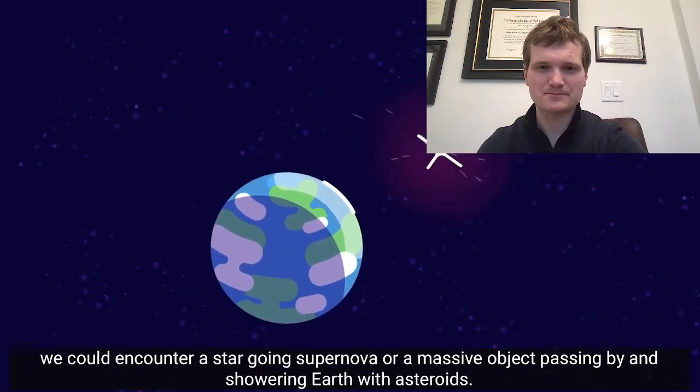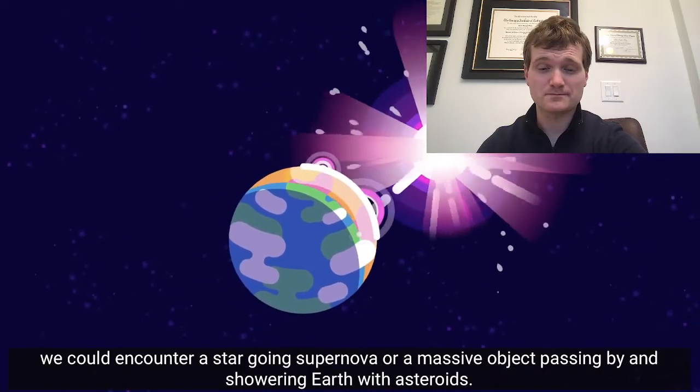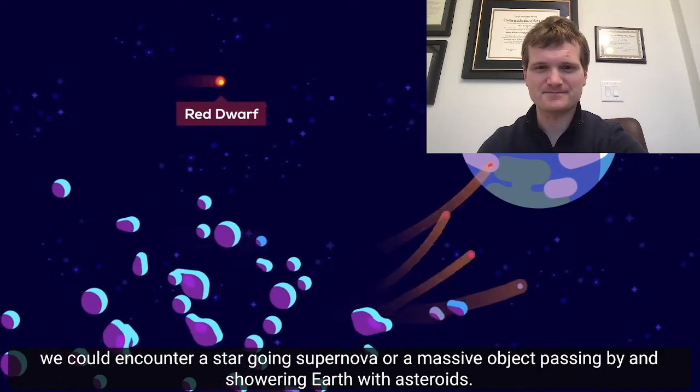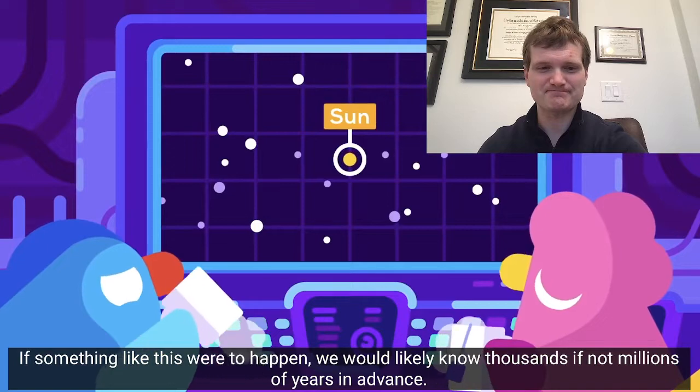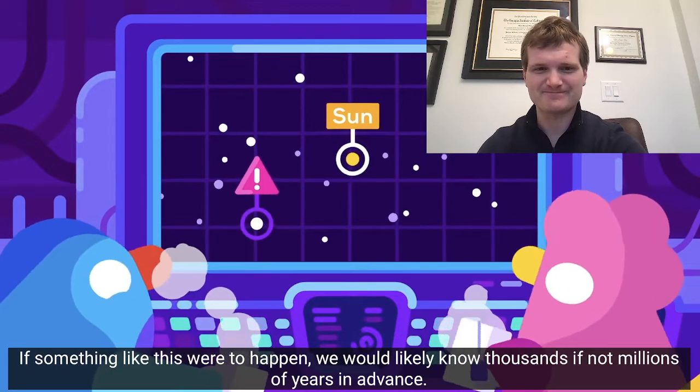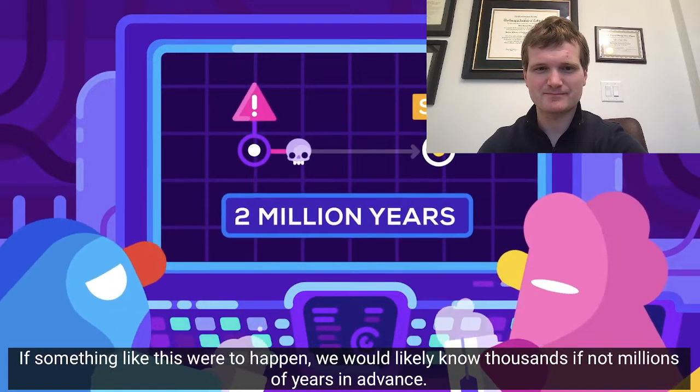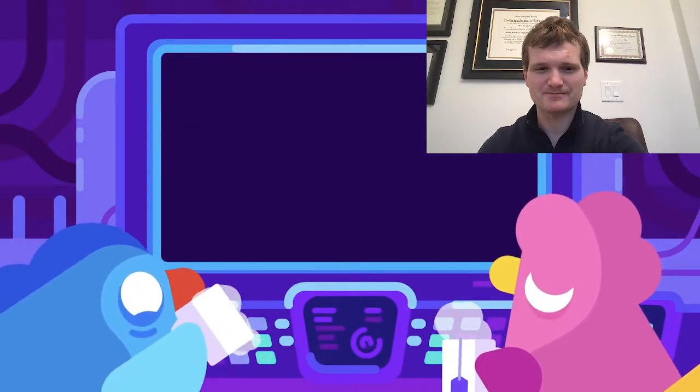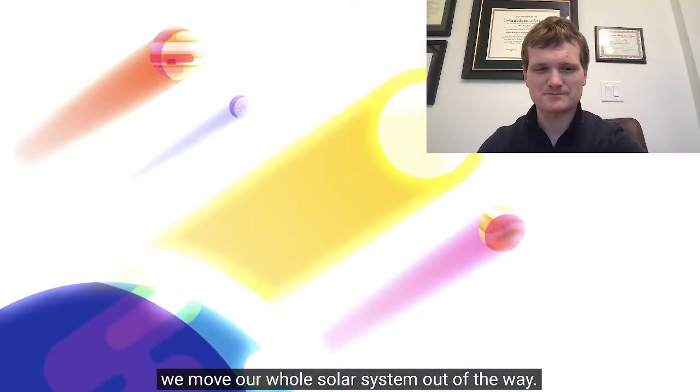At some point, we could encounter a star going supernova, or a massive object passing by and showering Earth with asteroids. If something like this were to happen, we would likely know thousands, if not millions of years in advance. But we still couldn't do much about it. Unless, we move our whole solar system out of the way.